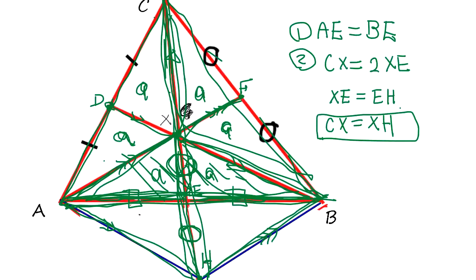What does it mean? It means that when you hold this triangle at this point, the weight distribution is equal in every direction. That's why you can balance the triangle. If you have a stick from the bottom of this triangle and hold it, the triangle is going to stay balanced, because the weight distribution is the same in all directions. That's why it's the center of gravity.